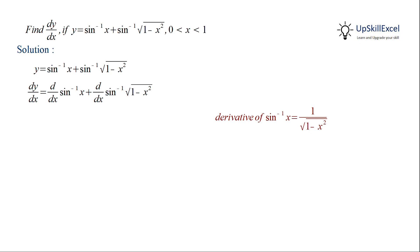For the first term, we can apply this directly, whereas for the second term we have to replace x by under root of 1 minus x square and then do differentiation of under root of 1 minus x square due to chain rule method.